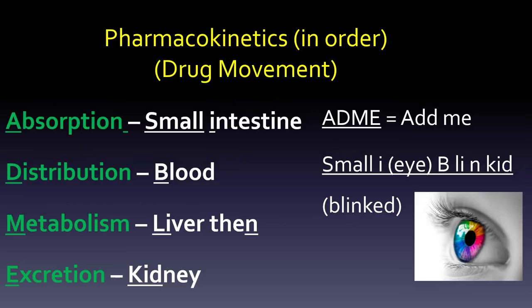What does that mean practically? There are four big pieces to it and there's an order. We use the ADME mnemonic: A, D, M, E. A for absorption, D for distribution, M for metabolism, and E for excretion.